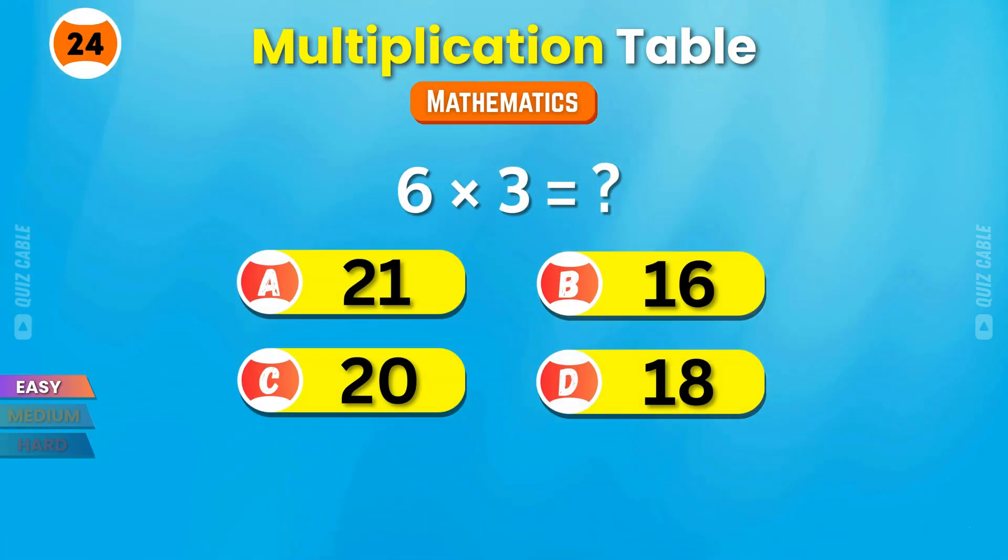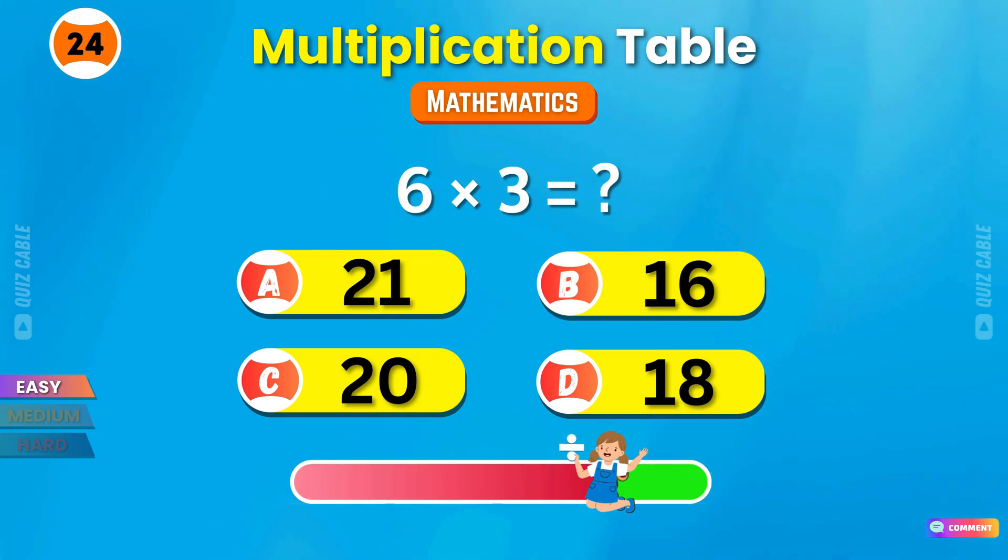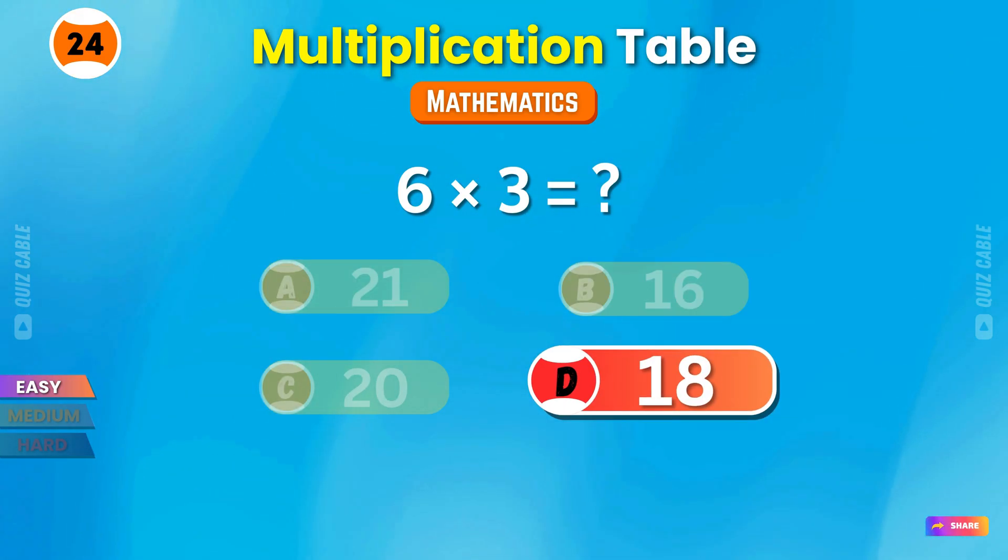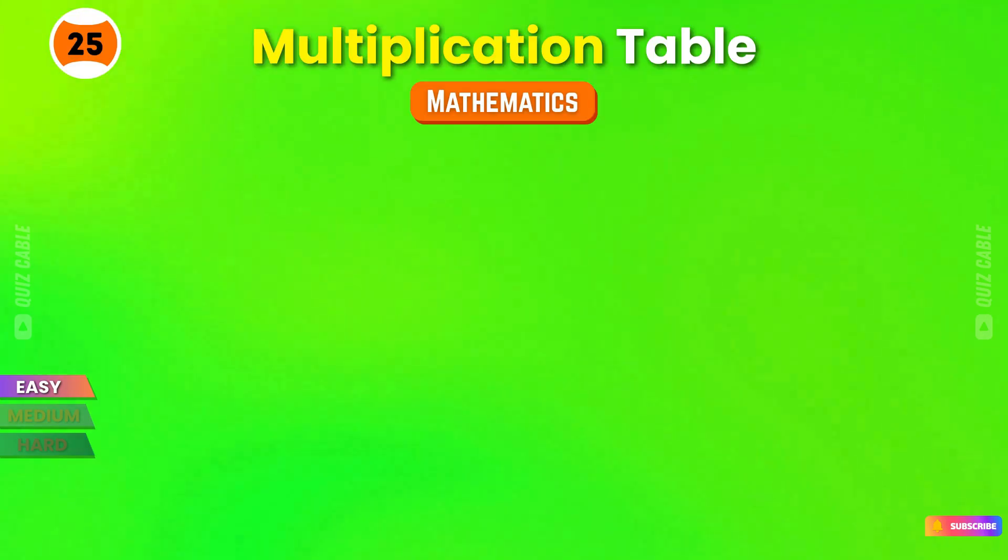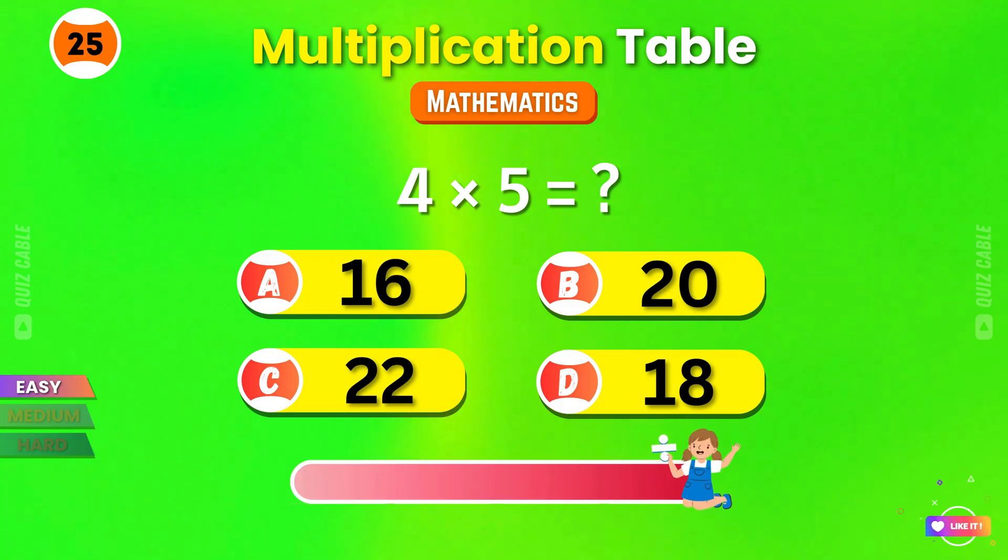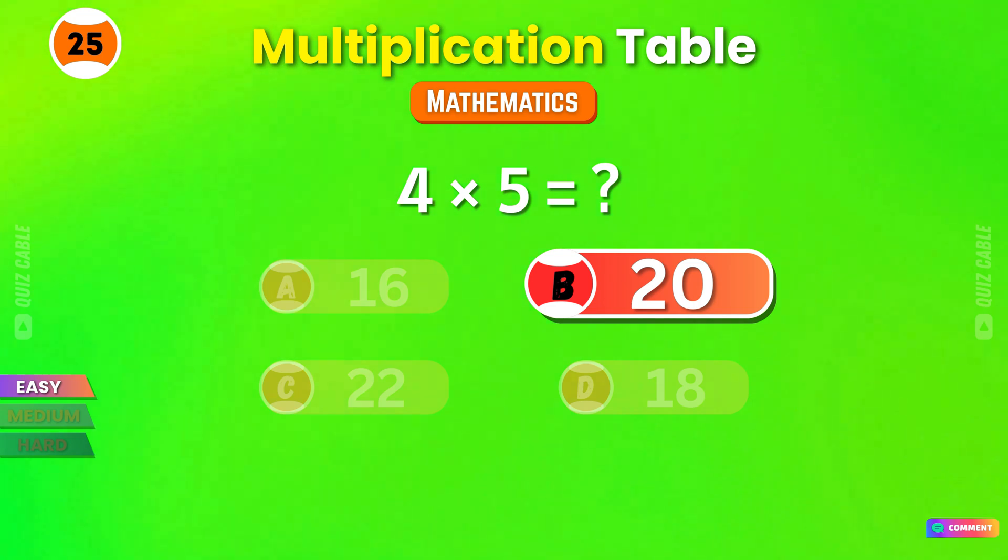6 times 3? 18! Perfect again! 4 times 5? 20! You're doing great!